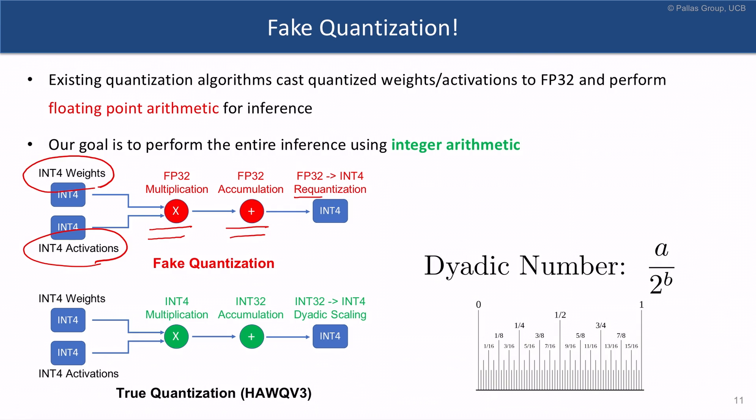While this allows you to reduce the model size, it doesn't allow you to utilize low precision hardware units that are faster than floating point multipliers.